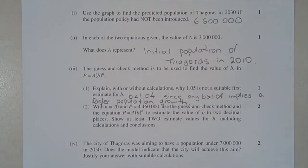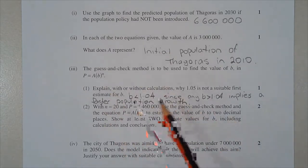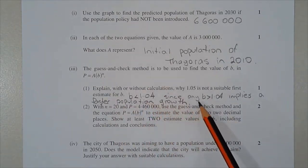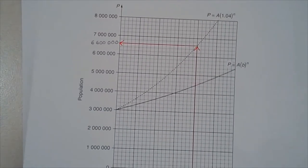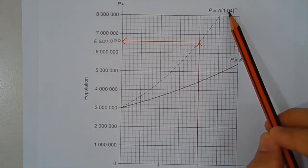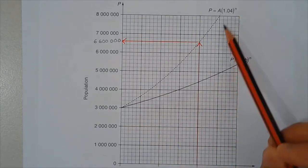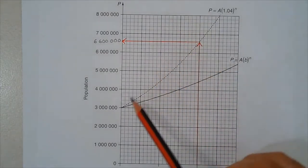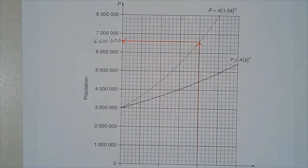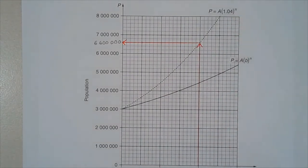Part three, question 1: explain why 1.05 is not a suitable first estimate for b. The value of b needs to be less than 1.04, since any value of b greater than 1.04 implies a faster population growth rate. On the graph, b equals 1.04 gives the dotted curve. If b is greater than 1.04, the solid curve would be above the dotted curve, indicating faster population growth. So we need a value of b less than 1.04.